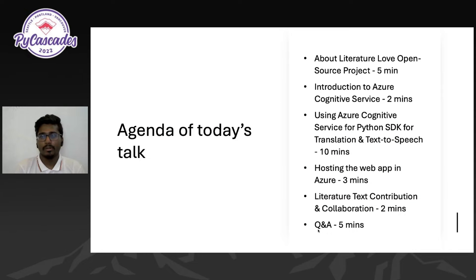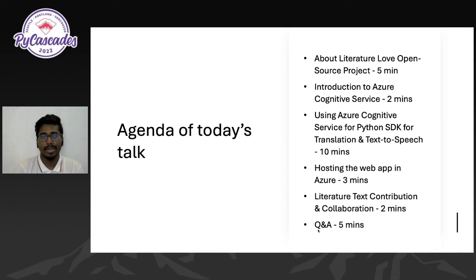The agenda of today's talk: we'll first introduce what Literature Love is, what the open source project really means, the source of inspiration behind it, and the progress so far. Then we'll touch on technical concepts like Azure Cognitive Services, which we've extensively used to accomplish our objectives. We'll present the solution architecture, and the technical implementation of translation and audio synthesis. Finally, I'll explain a few easy steps to host a website within minutes using Azure, and we'll cover how you can contribute to the literature-text collaboration.